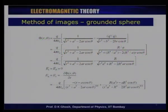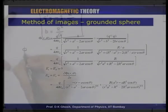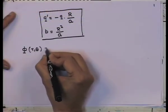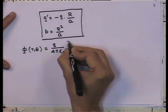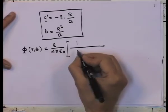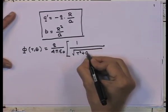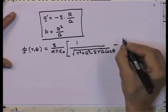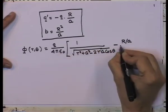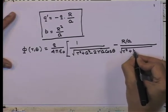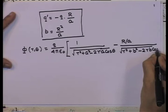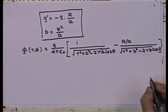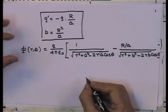This guarantees that the potential on the surface of the sphere equals zero. The potential φ(r, θ) — other than the factor q/(4πε₀) — is given by: 1/√(r² + a² − 2ra cosθ), minus (r/a) times 1/√(r² + b² − 2rb cosθ). Using b = R²/a, this can be rewritten with some algebra.